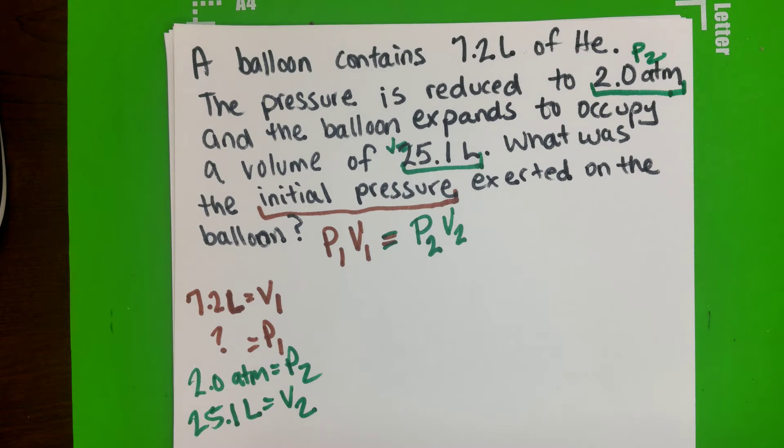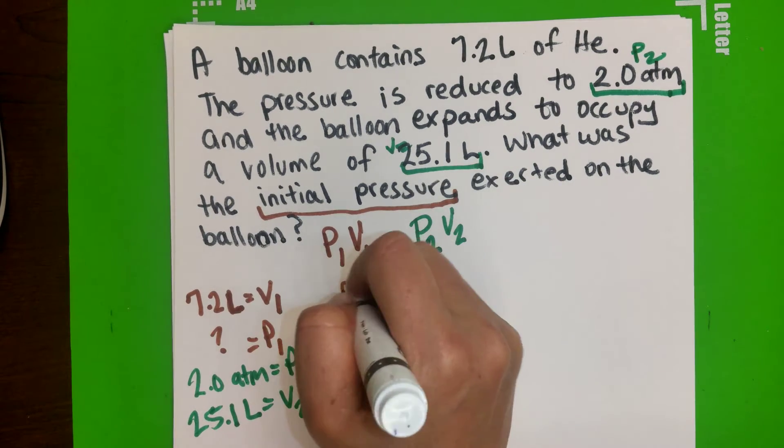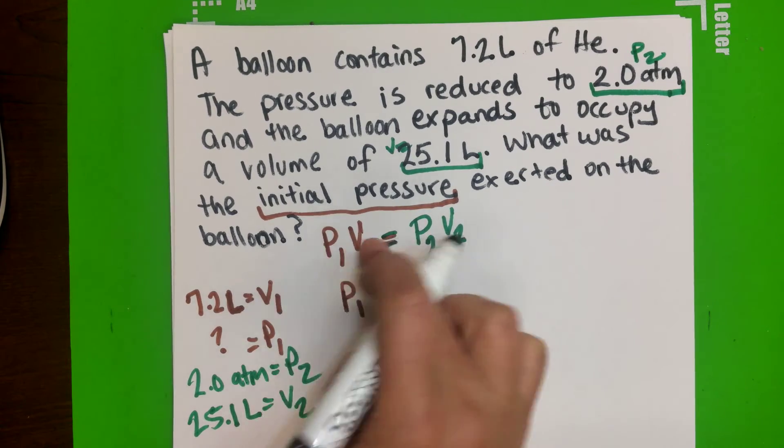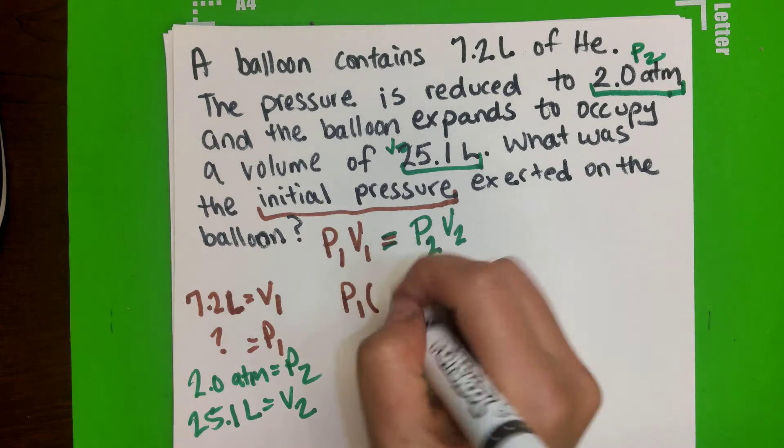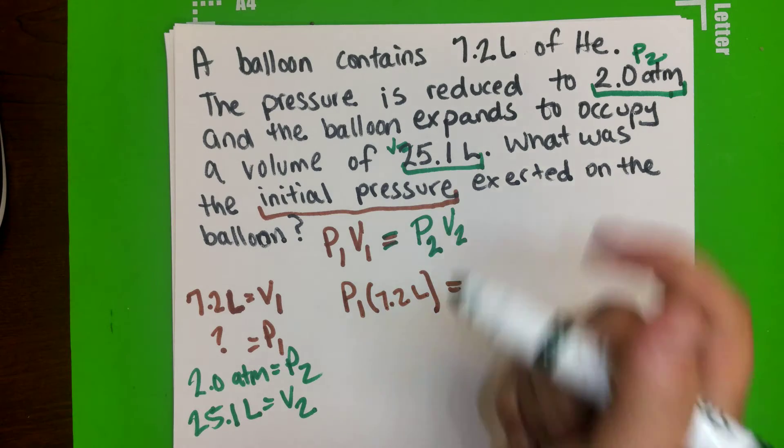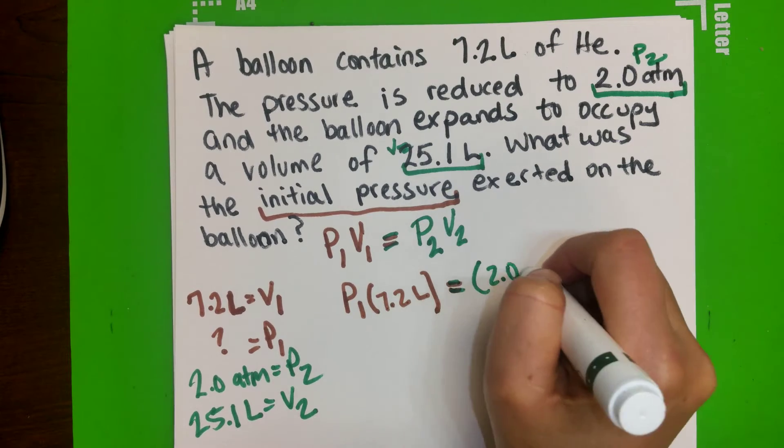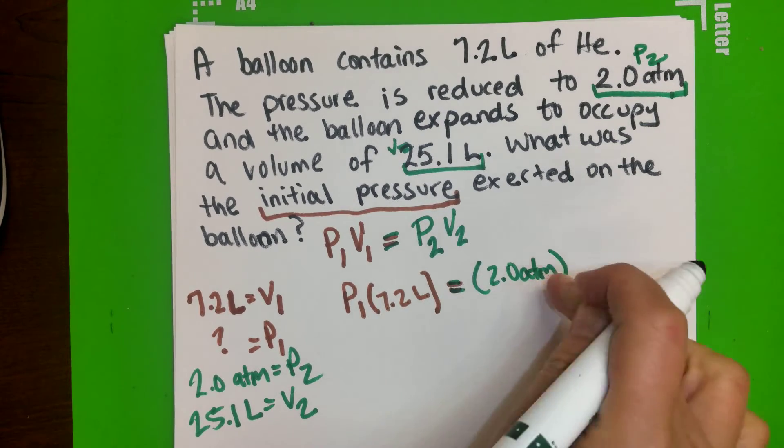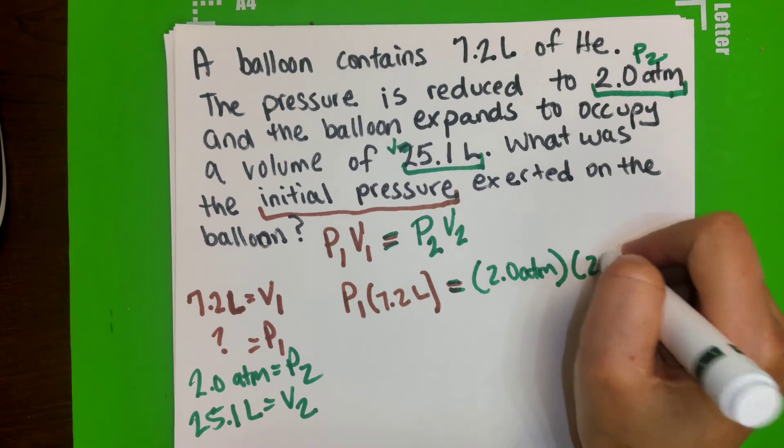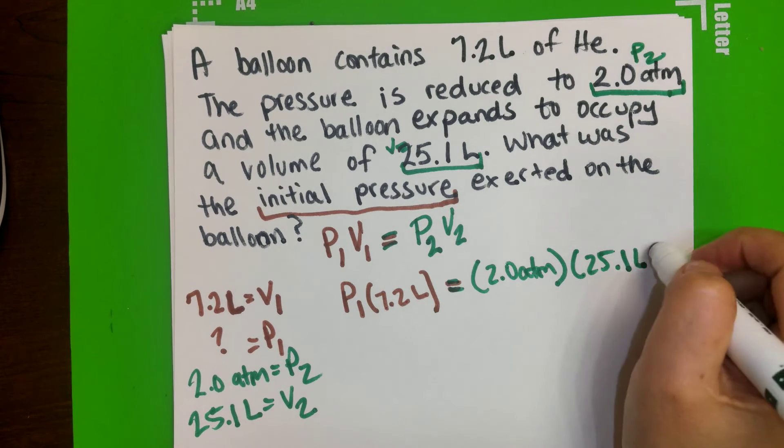So we're ready to set it up. P1, which is the unknown, we're going to leave it as a symbol. And then your V1, and this is multiplying because they're right next to each other, so I'm going to put a parenthesis, and that will be your 7.2 liters. And that equals to your P2, which is your 2.0 ATM atmospheric pressure, and then the volume will be your 25.1 liters, and liters is for volume, so that's your V2.